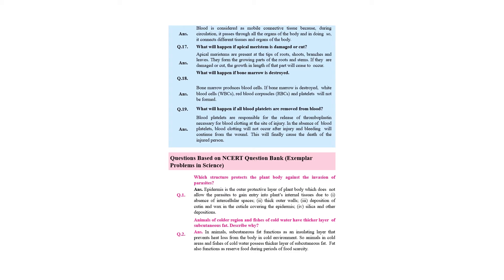Why is blood considered to be a connective tissue? Blood is considered a liquid connective tissue because during circulation it passes through all the organs of the body, and in doing so it connects different tissues and organs of the body.